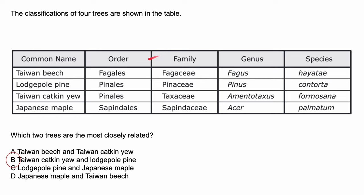What's the scientific name for the Lodgepole Pine? The scientific name is the genus and species combined, so it's Pinus contorta. These are just some practice problems — if you had a hard time with these, that just means you need to practice a little bit more.